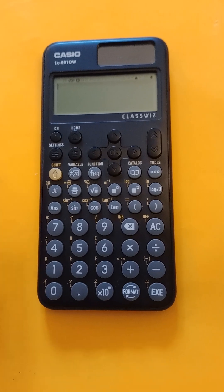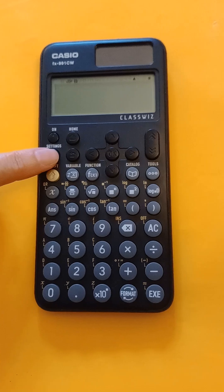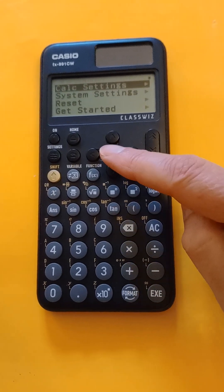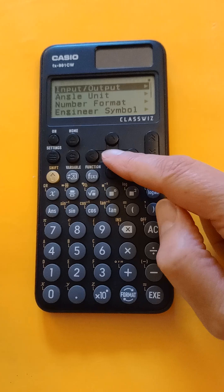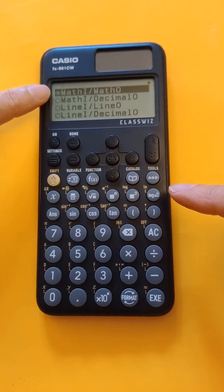To set this calculator to produce decimal answers instead, press Settings, OK for Calculator Settings, OK for Input Output, and it's currently on the top one.